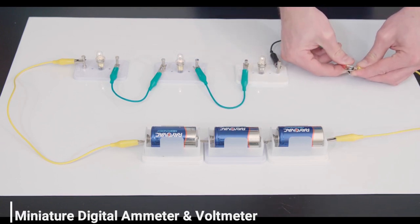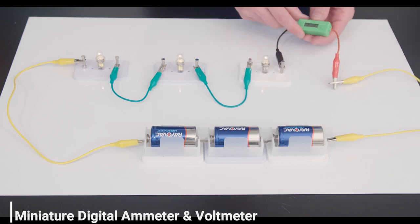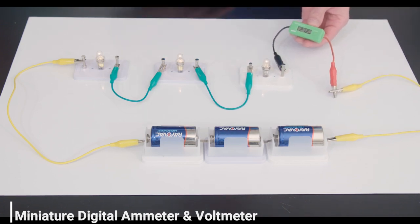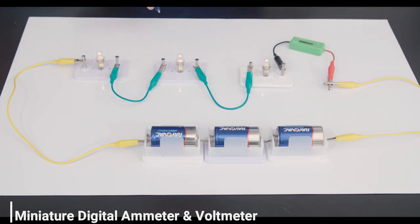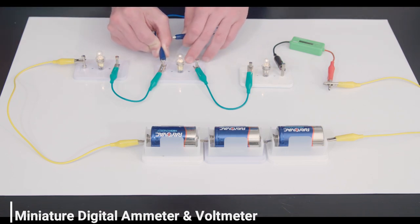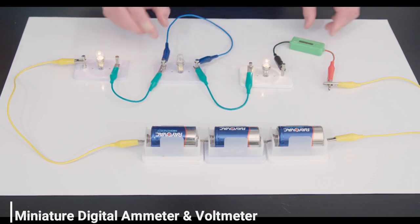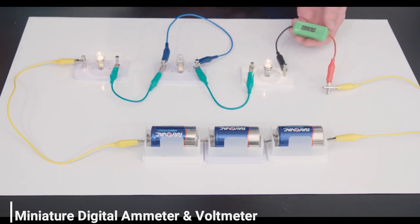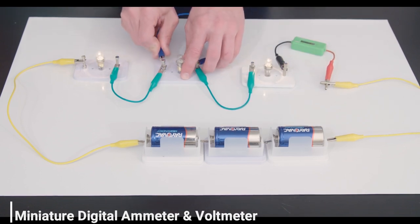We add the ammeter to our circuit, and we can see here that with the three bulbs the current is only 212 milliamps. But when we short the circuit, we get 257 milliamps, which proves that more current flows through a shorter circuit.